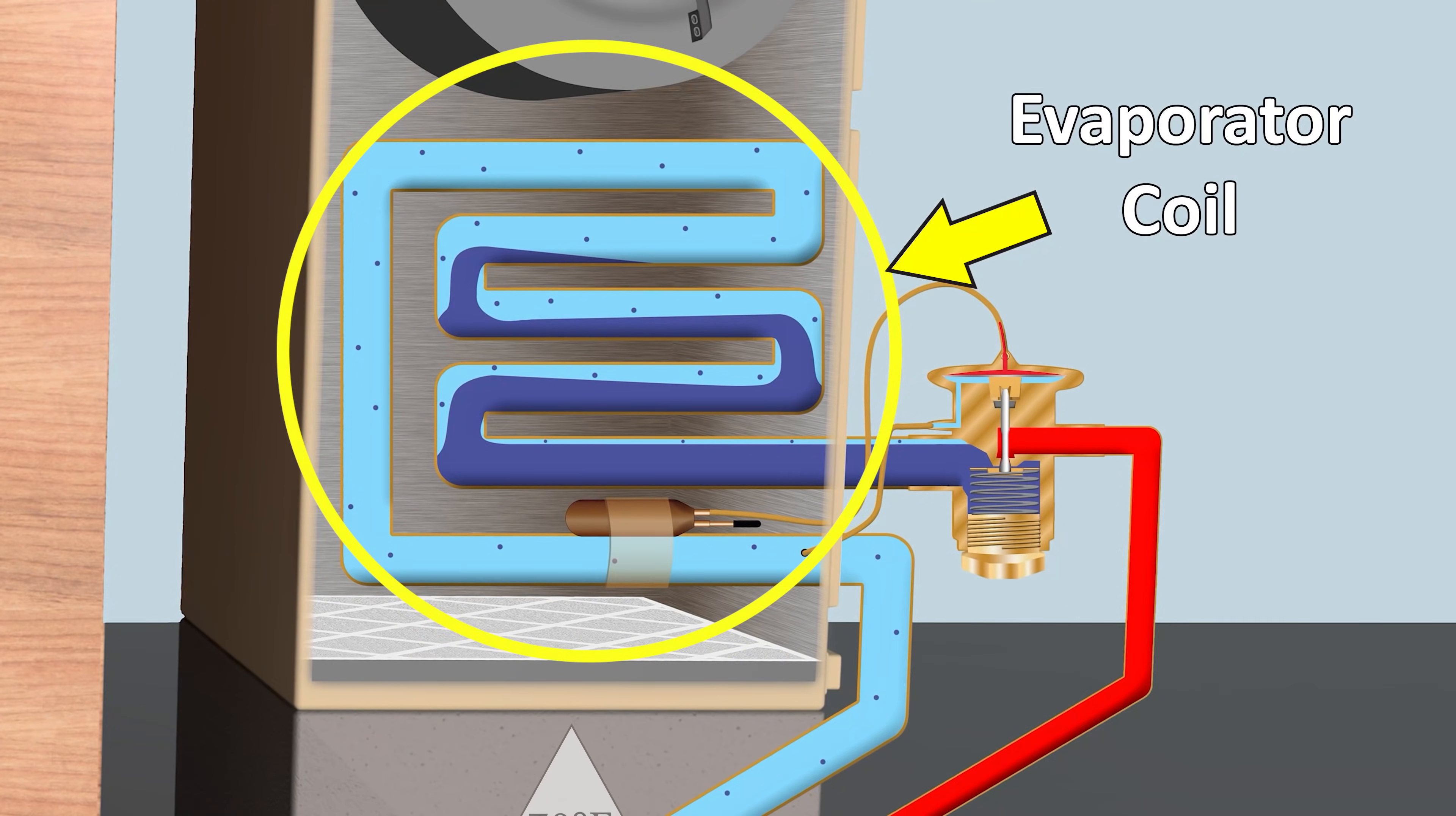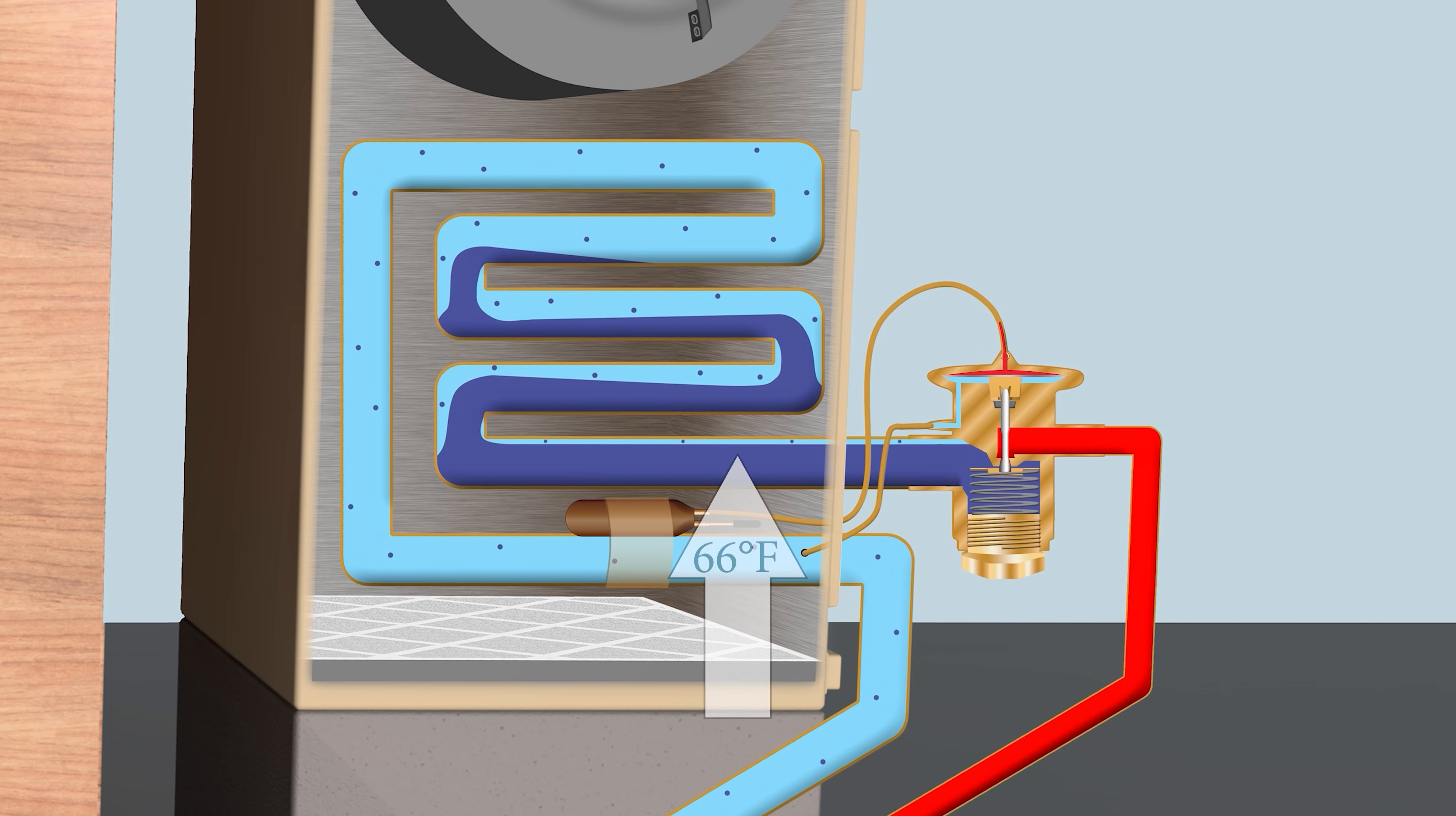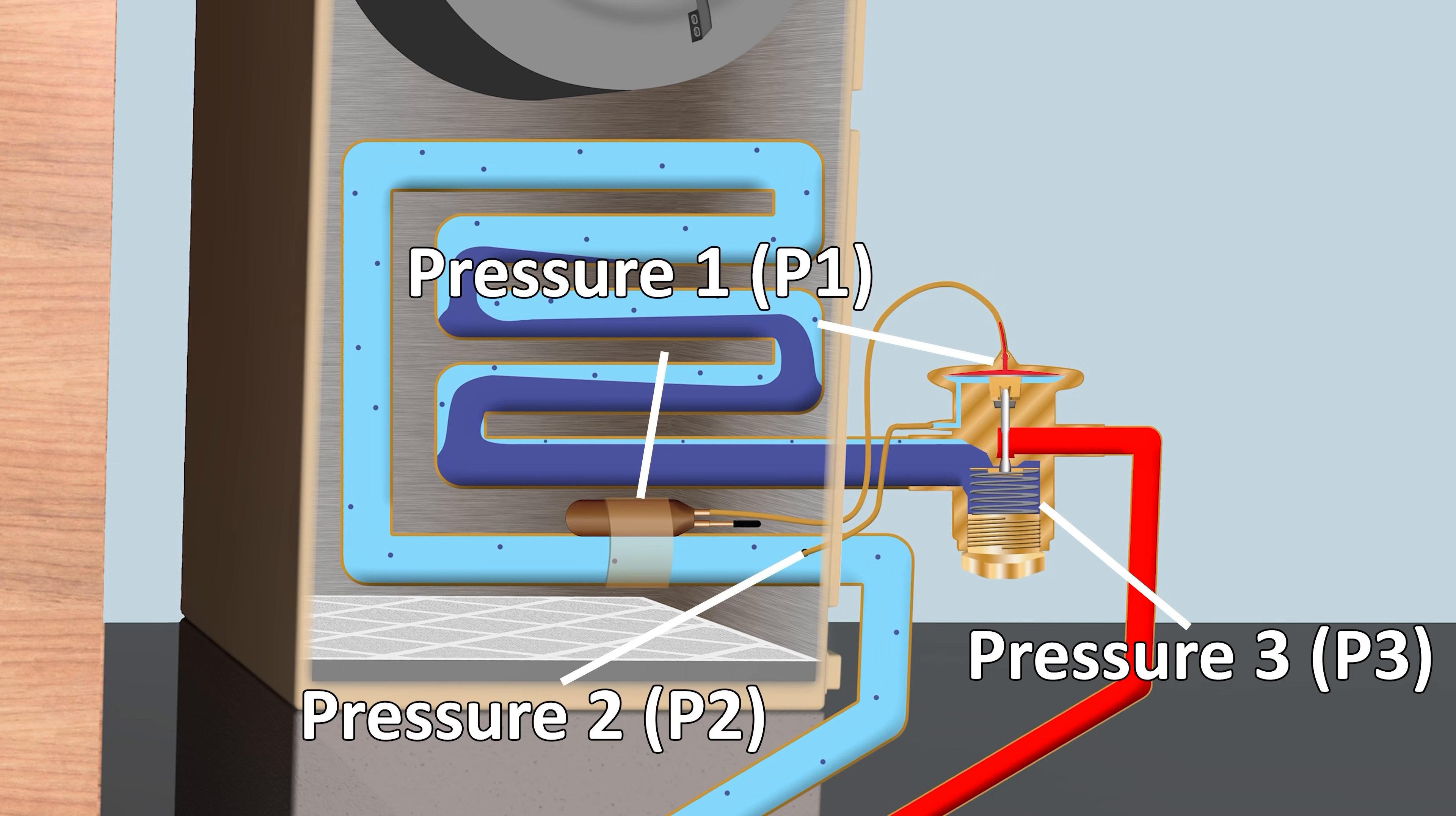You got to remember that we have heat that crosses the evaporator, so that's in the air, the airflow crossing the coil. The thermostatic expansion valve's job is to allow enough refrigerant into that coil to absorb the heat from the air. We have three pressures that are exerted on the thermostatic expansion valve in order for it to do its job.